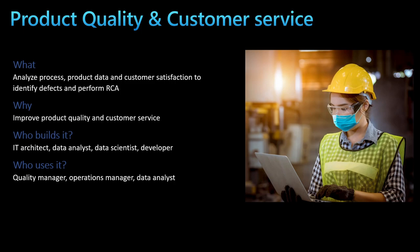The second main business outcome and objective that Parnell Aerospace set for themselves is to enhance product quality and also work towards sustainability. For that, they need to analyze their process, the product data, and the customer satisfaction to identify defects and perform root cause analysis in a typical scenario.